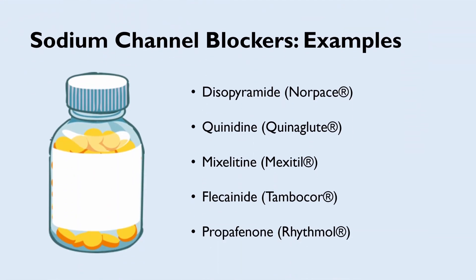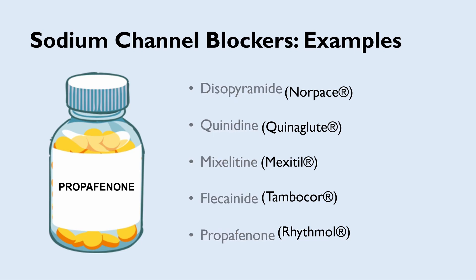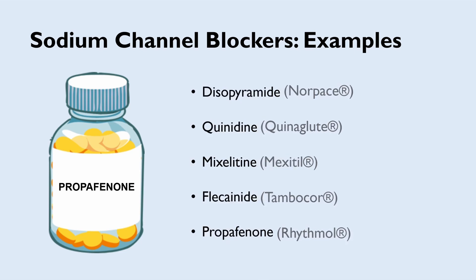Some frequently encountered examples of medications within this class include disopyramide, quinidine, mexiletine, flecainide, and propafenone. Remember that almost all medications have two names — the generic names and, in brackets, their trade or brand names, which you may be more familiar with. Both names refer to the same medication, meaning they have identical active ingredients. Keep an eye out for a future video explaining the difference between generic versus trade names.